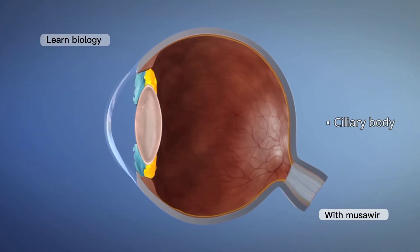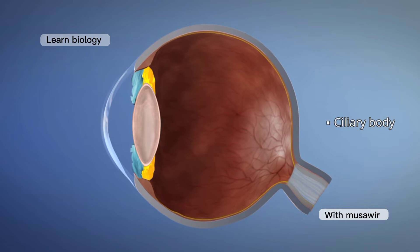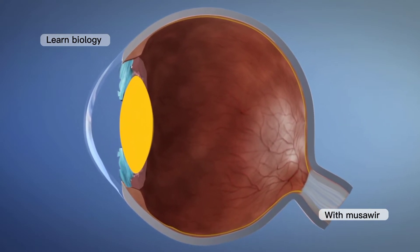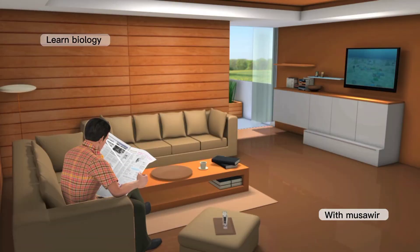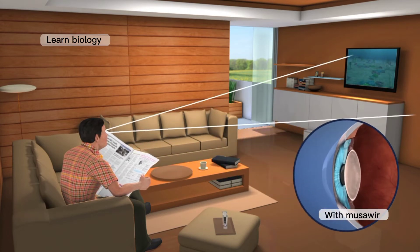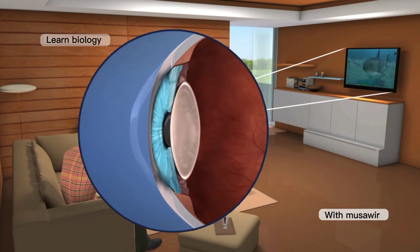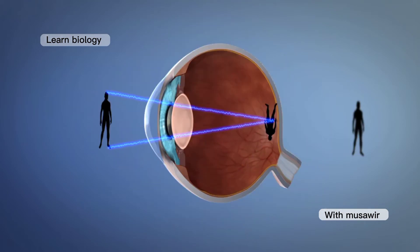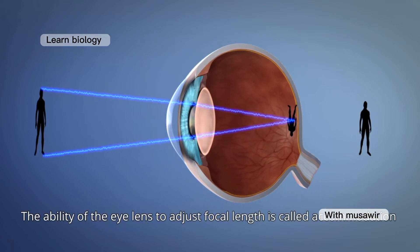The ciliary body holds the lens just behind the iris. The muscles attached to the lens change its shape to help you adjust your eye's focus to see near or distant objects. The ability of the eye lens to adjust focal length is called accommodation.